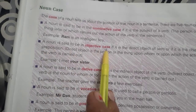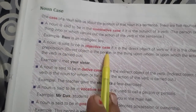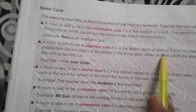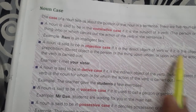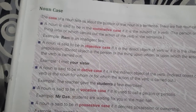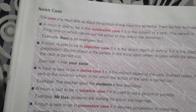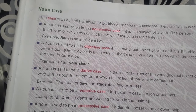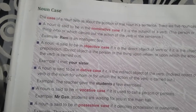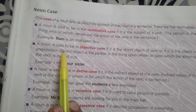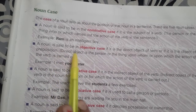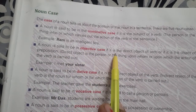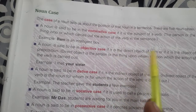If it is the direct object of the verb, or the object of the preposition, the noun is said to be in the objective case. There are two types of object: direct object and indirect object. The noun is said to be in an objective case if it is the direct object of the verb.